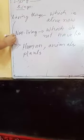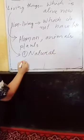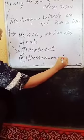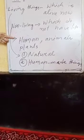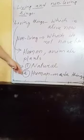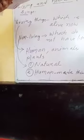Non-living things can be classified into two types. Number 1: Natural. Number 2: Man-made. Examples of natural non-living things are mountains, clouds, moon, stars, and water.